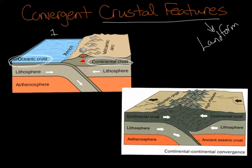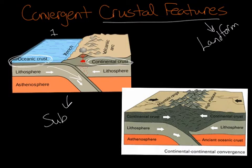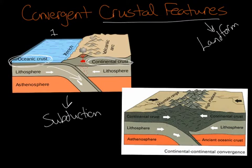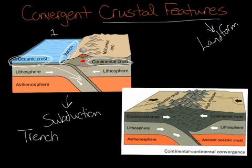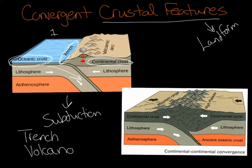The ocean plate goes down and under the continental crust — this is called subduction. When this happens, two things can occur: first, we have a trench, like a dip there. The other thing is that volcanoes are formed. Those are two things that can happen when two plates converge or come together.